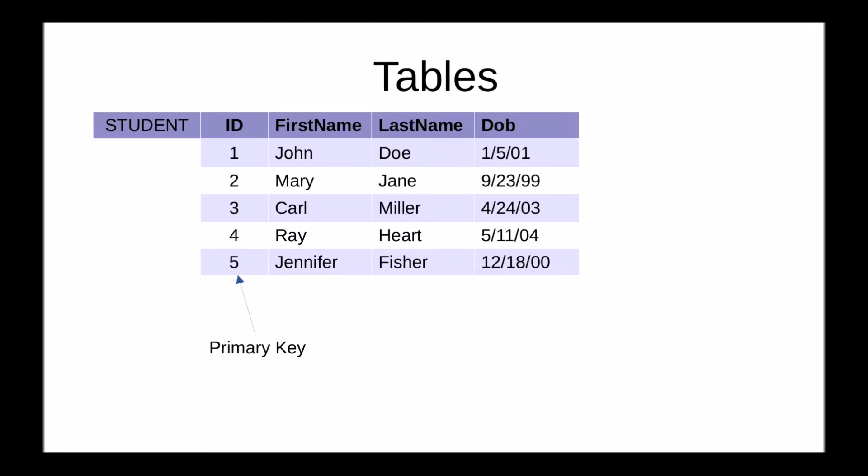Now in this example, the primary key is auto-generated. It's an integer that gets incremented each time a record is entered. But it doesn't have to be this way. It could also be the social security number or the student ID number that is unique and not always incremented by one.